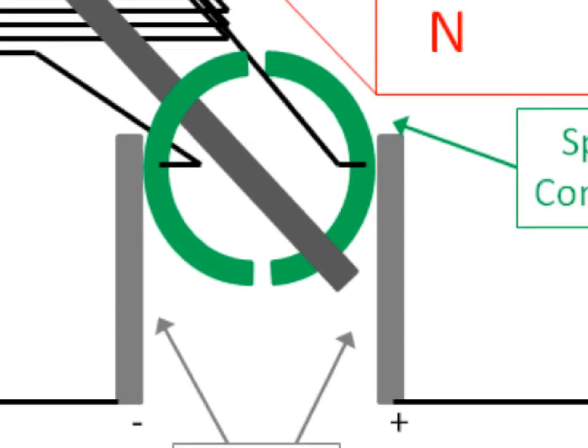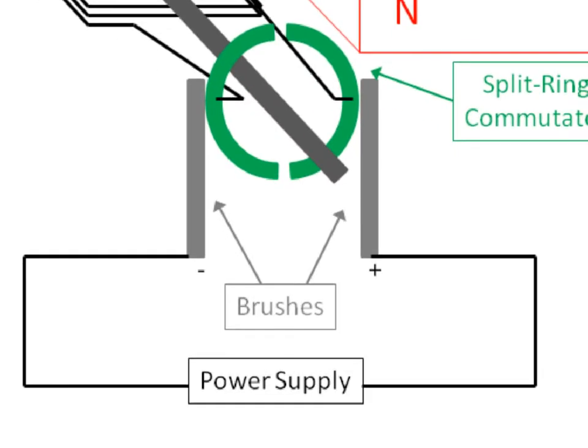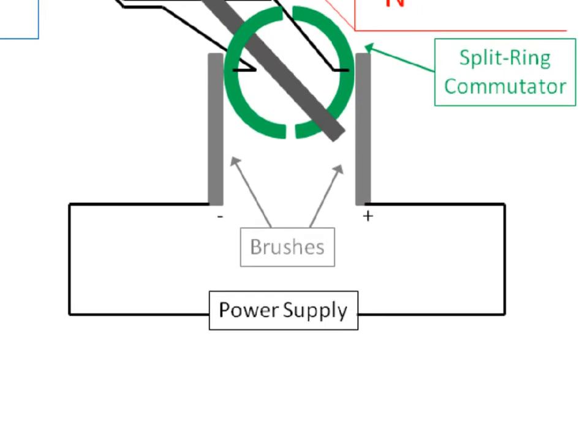Now the commutator itself is hooked up to what are called brushes. These brushes are conductive as well. They might be made out of metal fibers woven together, or they might just be a springy piece of metal that holds itself tightly up against the commutator on each side. And then those brushes are what's connected into the actual circuit. And then in the circuit, of course, you have to have a power supply that's providing the electrical current.